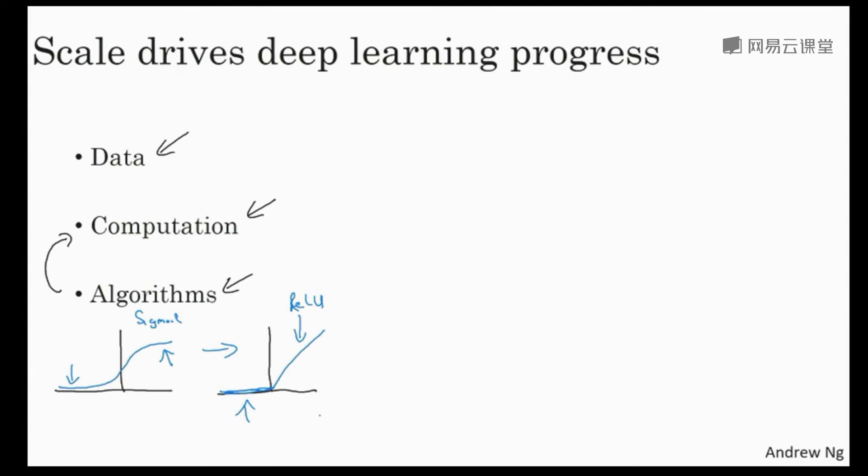So there have actually been quite a lot of examples like this where we change the algorithm because it allows our code to run much faster and this allows us to train bigger neural networks or to do so in a reasonable amount of time even when we have a large network or a lot of data.